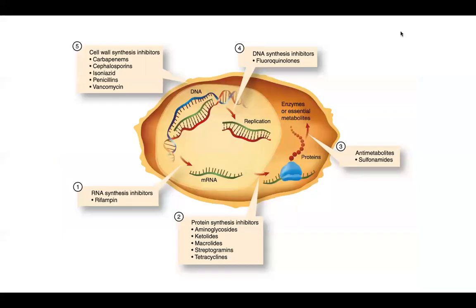Just remember this diagram of the bacterial structure and the classification of antimicrobials. RNA synthesis inhibitors — for example, rifampin — inhibit the formation of RNA. Protein synthesis inhibitors include aminoglycosides, ketolides, macrolides, streptogramins, and tetracyclines. Antimetabolites, such as sulfonamides, inhibit essential metabolite conversion. DNA synthesis inhibitors include fluoroquinolones. Cell wall synthesis inhibitors include carbapenems, cephalosporins, isoniazid, penicillin, and vancomycin.